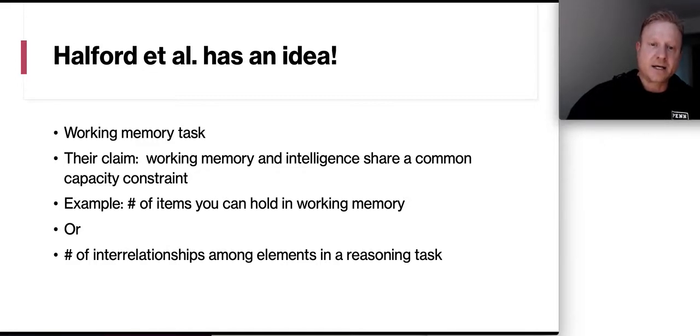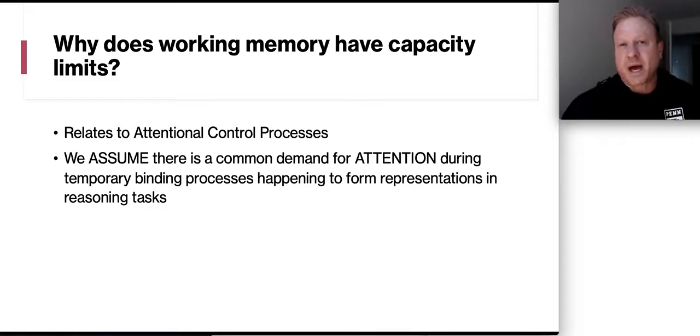Now, Halford et al. has an idea regarding working memory tasks. Their claim is that working memory and intelligence share a common capacity constraint, meaning you can only hold a finite number of items in your working memory, and there are only a finite number of interrelationships among elements in a reasoning task that you can hold. So there's a capacity issue here. Now, why do those capacity issues exist? They think that it relates to the attentional control processes, or you can only pay attention to so many things at one time. Now, we do assume that there is a common demand for attention during those temporary binding processes happening to form those representations and reasoning tasks, and we think it's just basically a capacity issue that too many resources are trying to go for a finite amount of attention.